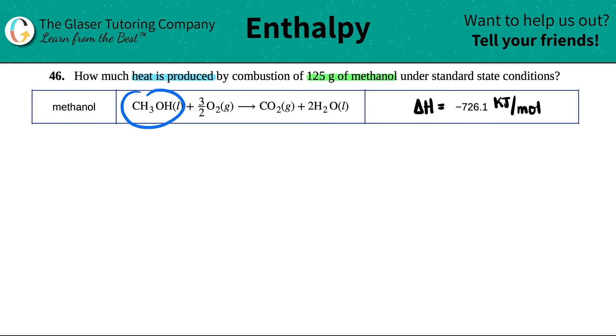Now, when one mole of methanol gets burned and produces the CO2 and 2H2O, 726.1 kilojoules of heat will be released. There's a negative here. Negative means released.